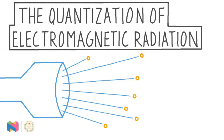In this video, we're talking about the quantization of electromagnetic radiation. This is one of the foundational ideas of modern physics, and its discovery in the early 1900s helped to explain a few puzzling phenomena.